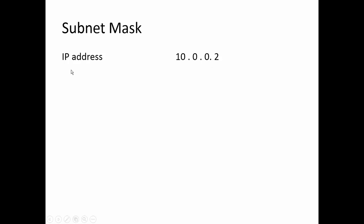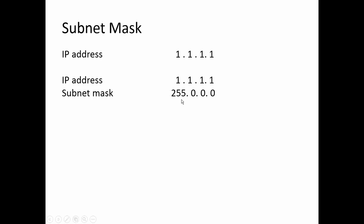You might ask, what do I need the subnet mask for? Well, here's an example that is less clear. With an IP address of 1.1.1.1, is it workstation 1.1.1 on network 1, or workstation 1.1 on network 1.1, or network 1.1.1 and workstation 1? The only way we would know is the subnet mask. With a class A subnet mask, it's workstation 1.1.1 on network 1.